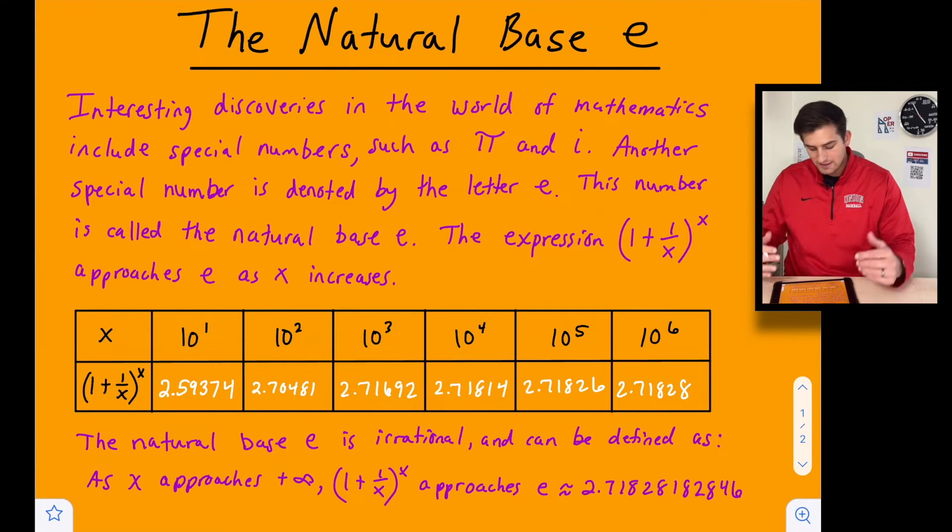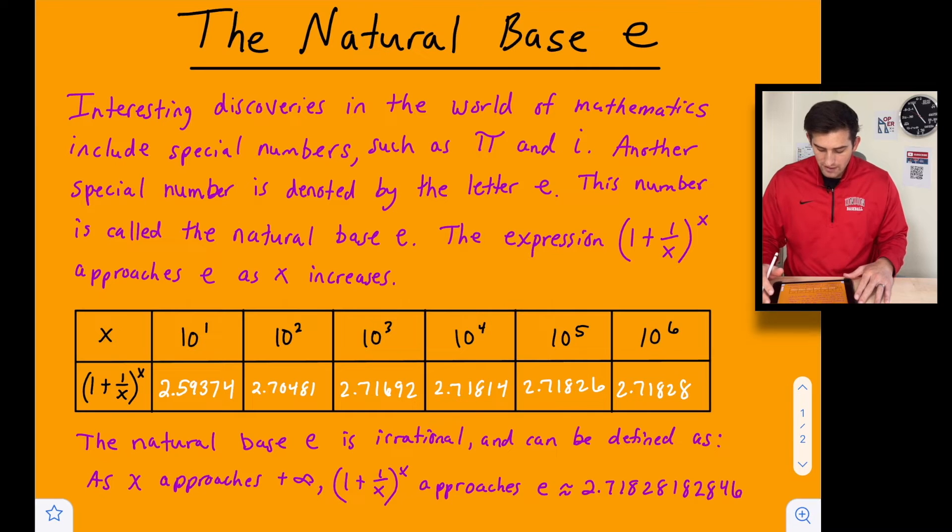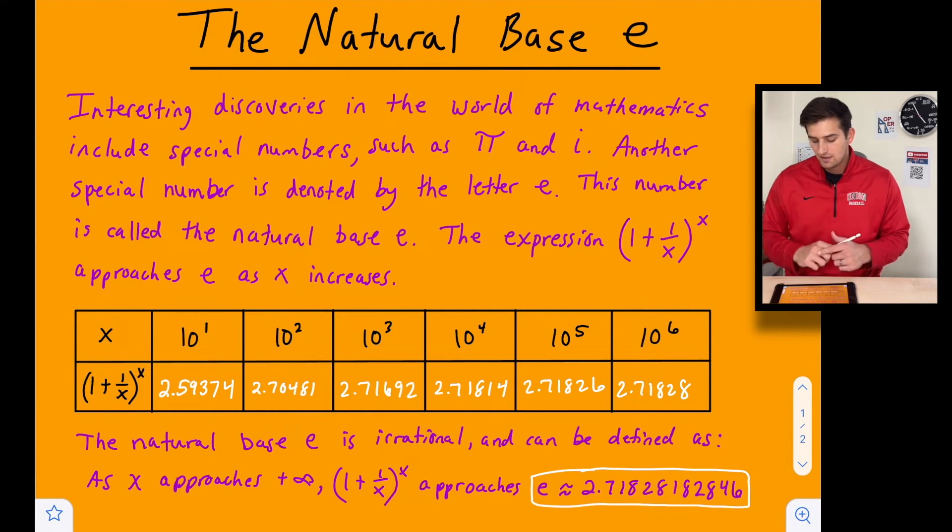So the natural base e, as we see here, is irrational. Just like pi and i, it's going to continue on forever. It does not have a pattern, it doesn't repeat. So it is irrational. And it can be defined as: as x approaches positive infinity, (1 + 1/x)^x approaches e, which we can approximate as this number right here, 2.71828182846.